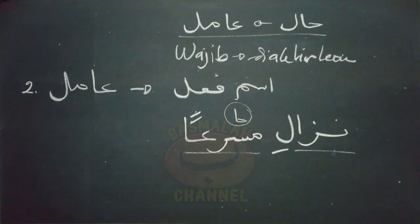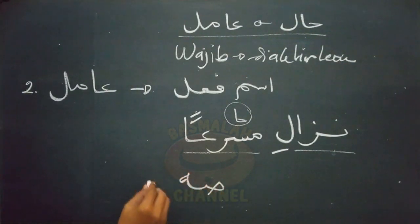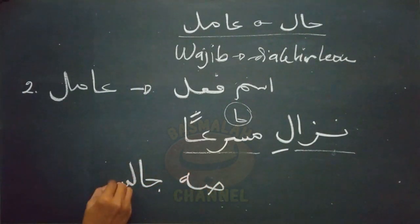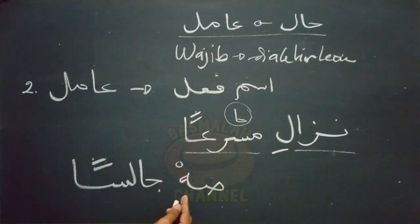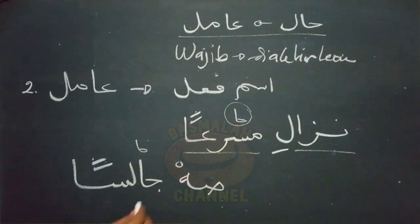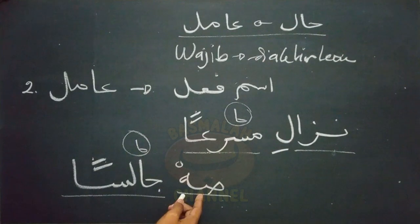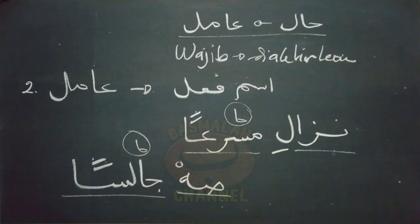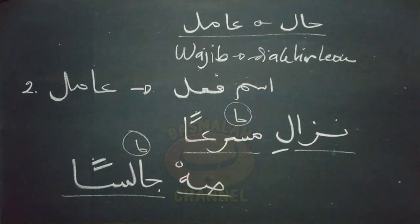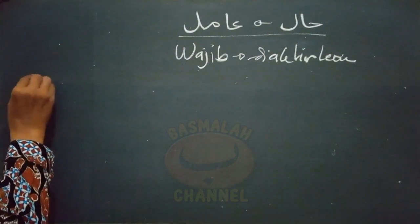Contoh lain seperti lafad 'shoh jalisan': hendaklah diam kamu, padahal dalam keadaan duduk. Lafad 'jalisan' di sini adalah hal, dan amilnya adalah lafad 'shoh' yang berupa isim fi'il. Di sini hal tidak boleh mendahului amilnya. Tidak boleh dikatakan 'jalisan shoh'. Ini yang kedua.